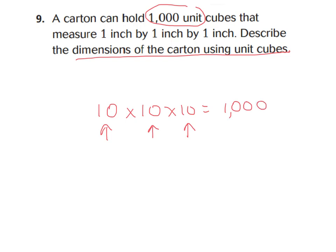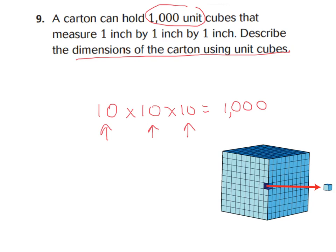It might look something similar to this. As you can see, we have 10 unit cubes wide, 10 unit cubes long, and 10 unit cubes high. So we know the dimensions of the carton would be 10 by 10 by 10, which would give me 1,000 cubic inches. And the reason why I'm saying cubic inches is because these are cubes, and my dimensions are in inches.